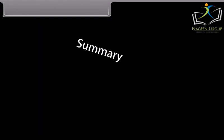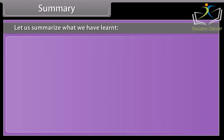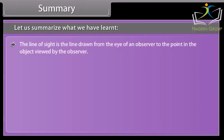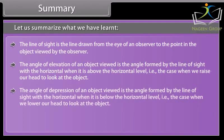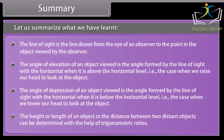Summary: Let us summarize what we have learnt. The line of sight is the line drawn from the eye of an observer to the point in the object viewed by the observer. The angle of elevation of an object viewed is the angle formed by the line of sight with the horizontal when it is above the horizontal level. That is, the case when we raise our head to look at the object. The height or length of an object or the distance between two distant objects can be determined with the help of trigonometric ratios.